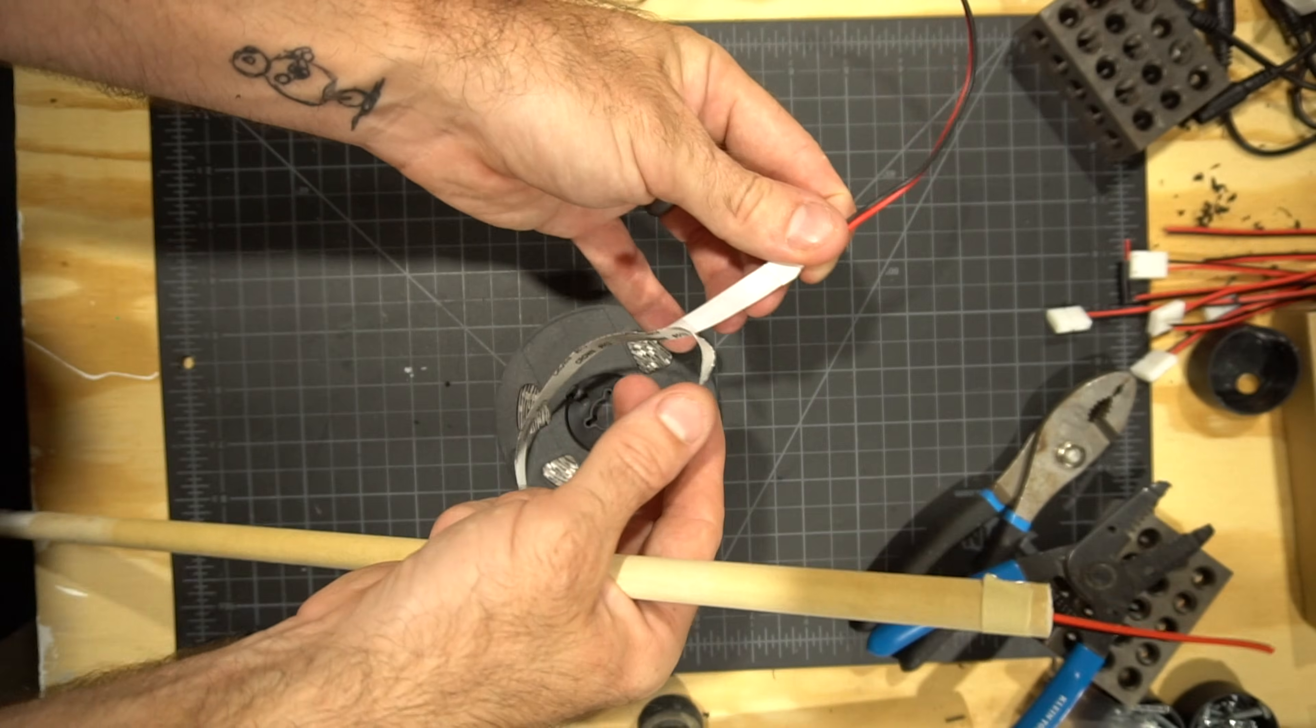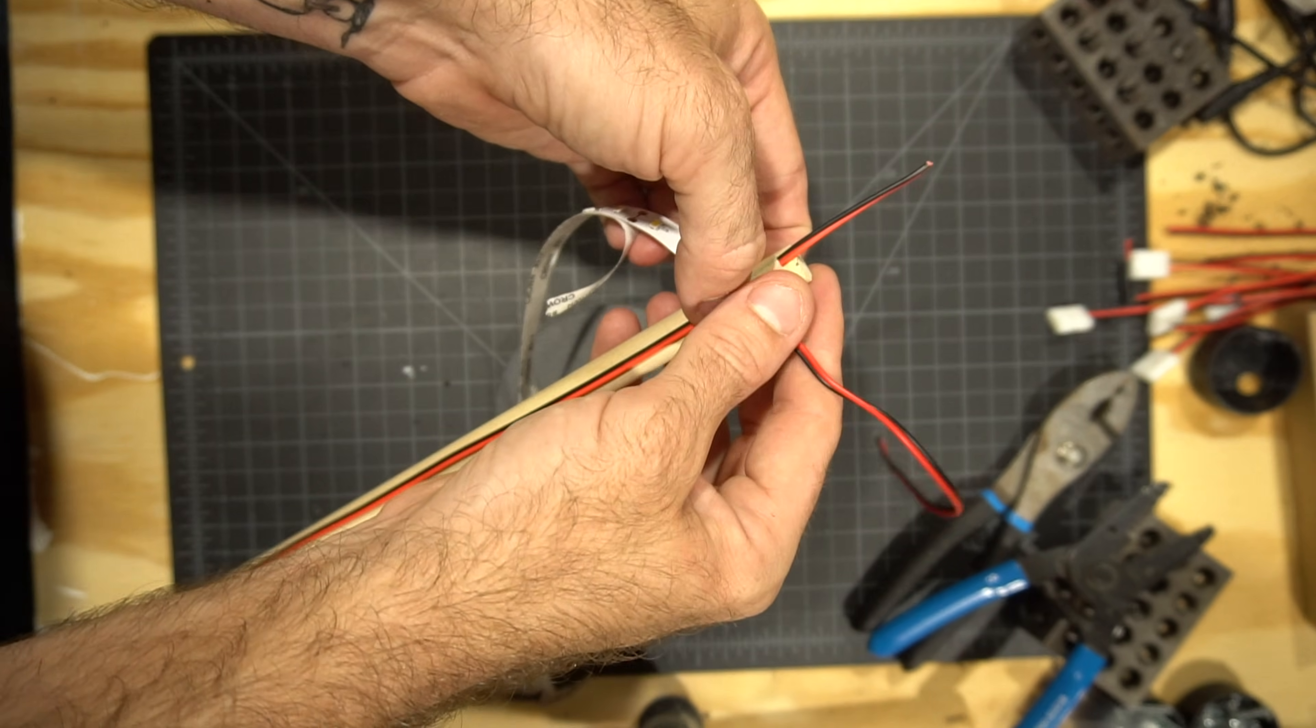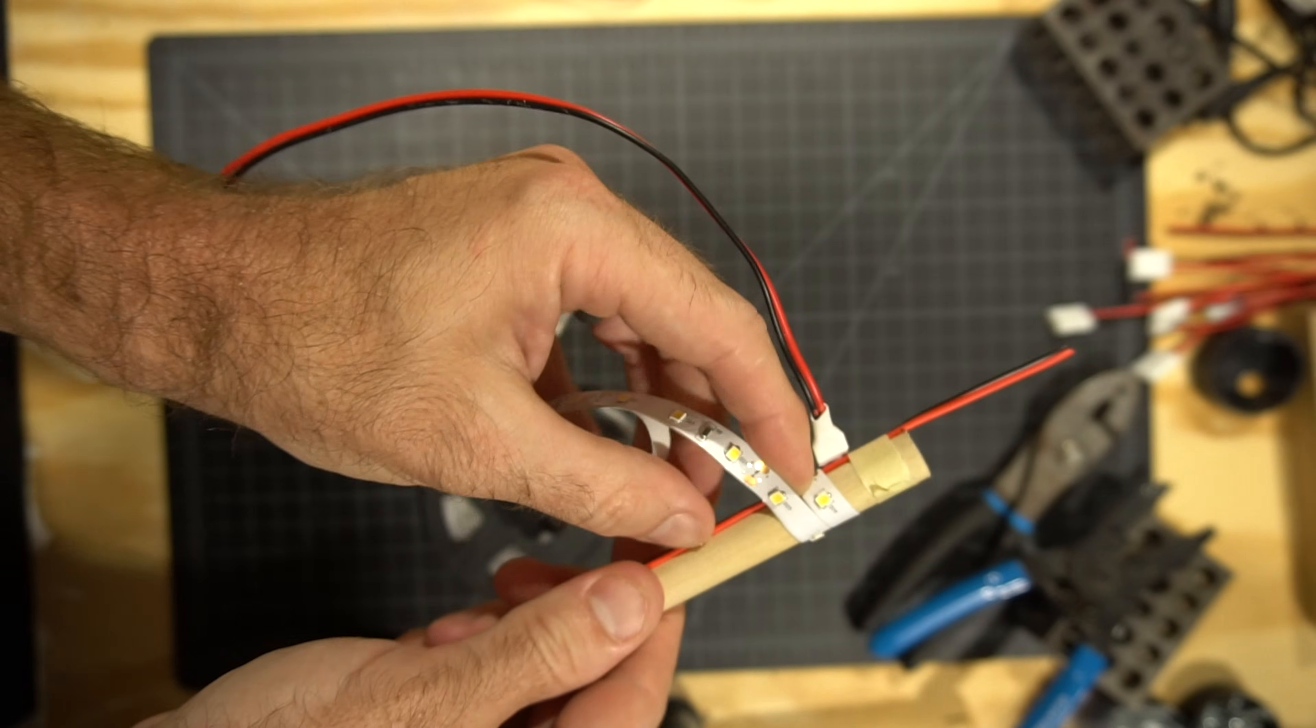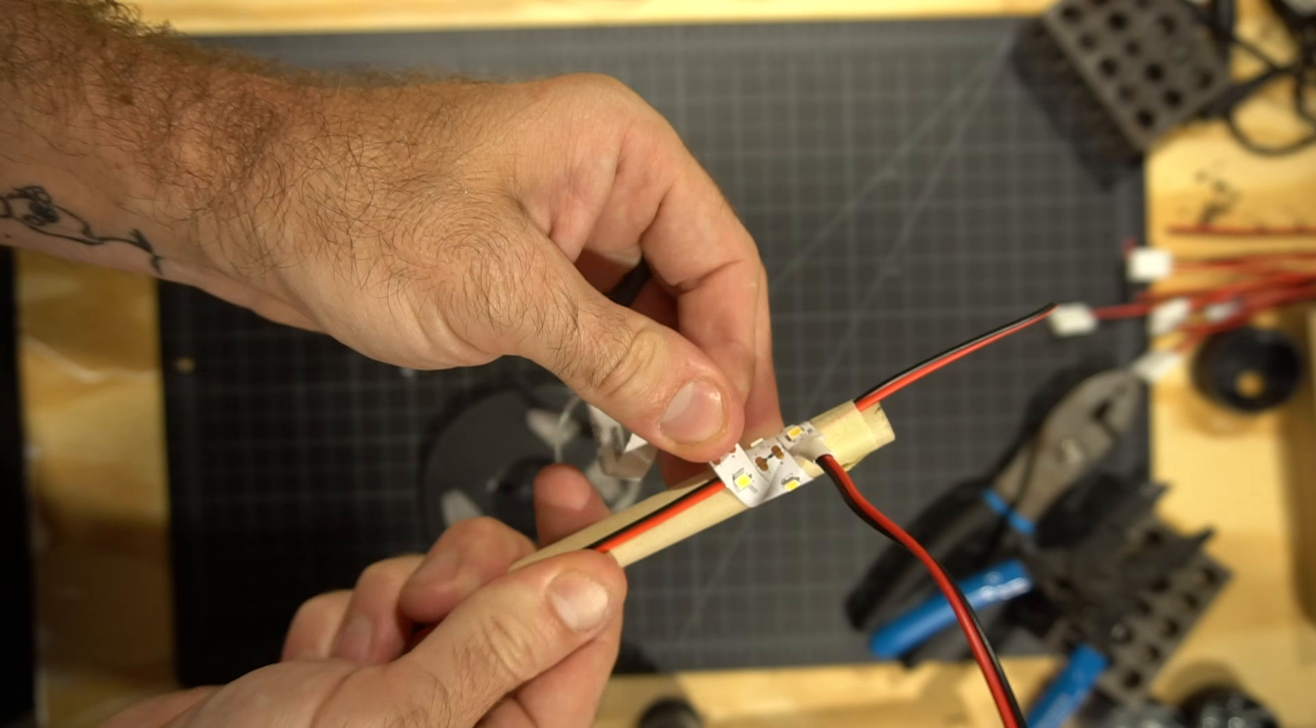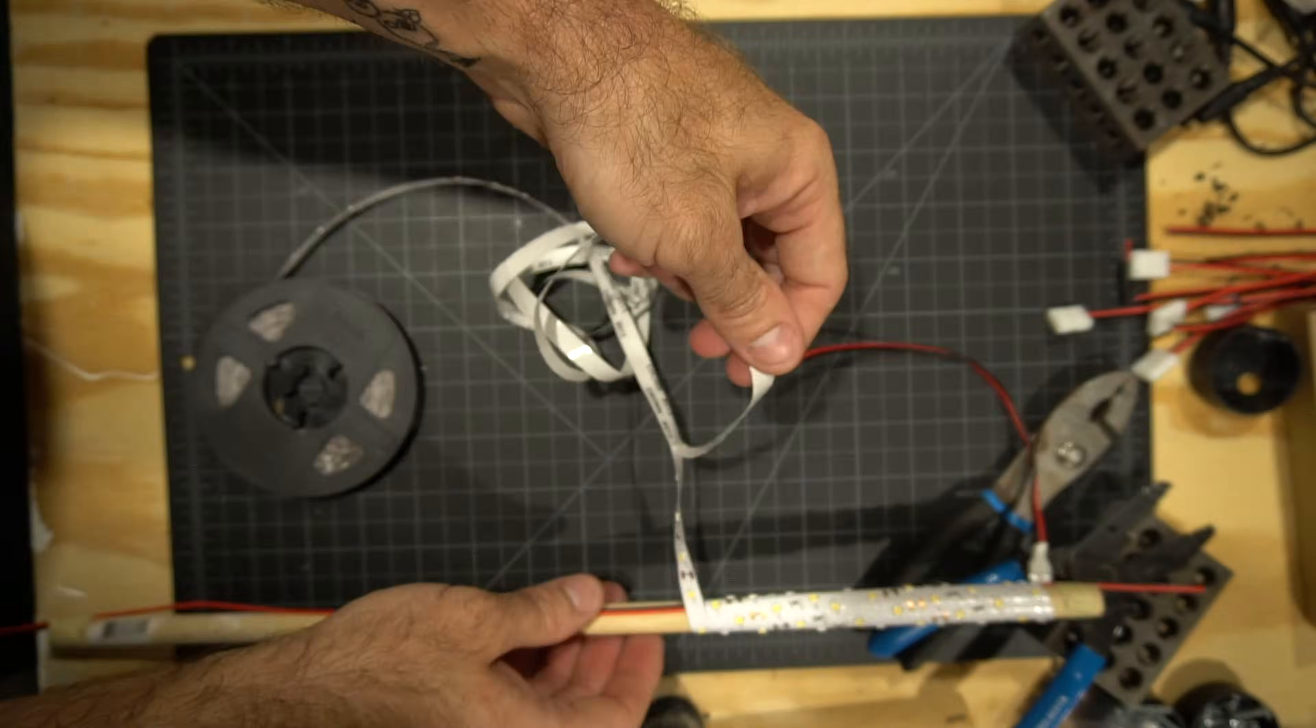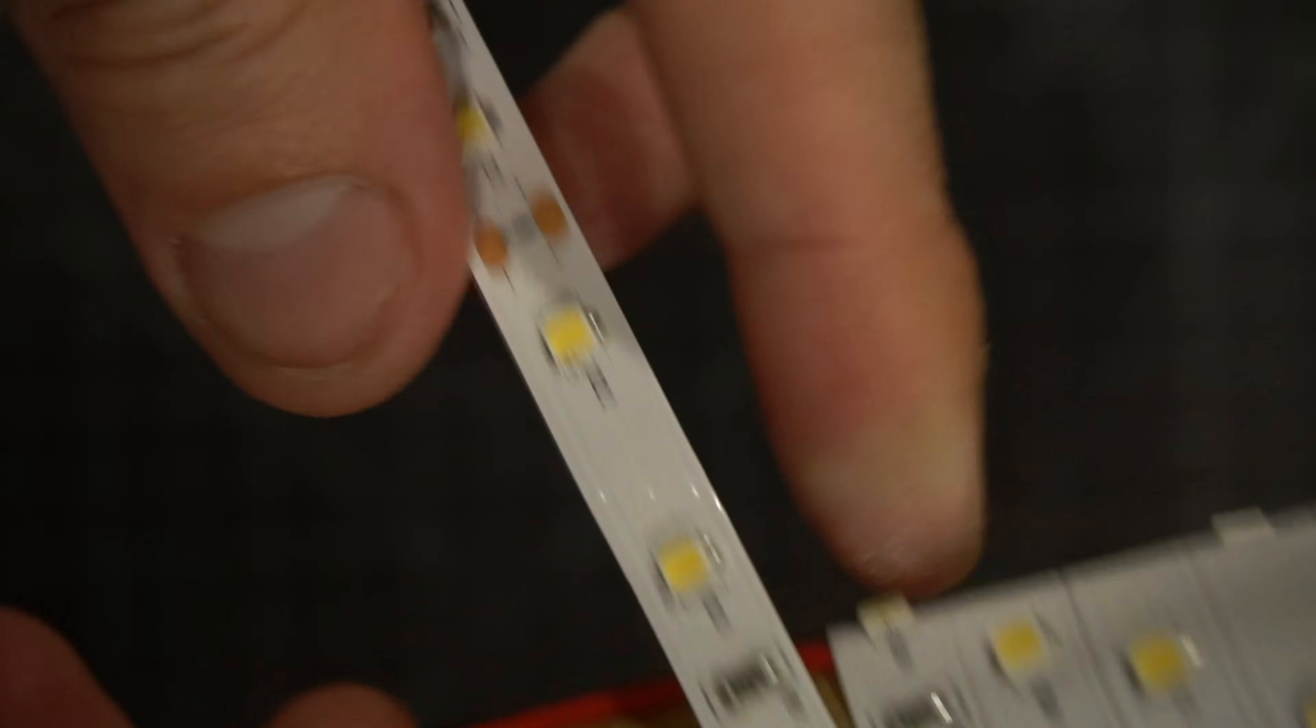Grab your LED strip, take the adhesive off the back, and leaving about a half inch of the dowel exposed, we want to stick it to the rod at an angle. Peeling the adhesive off as you go, wind it all the way down the rod. We want the LED strips touching but not overlapping.